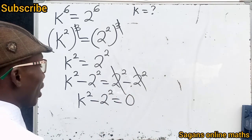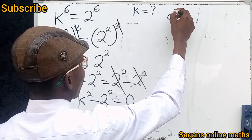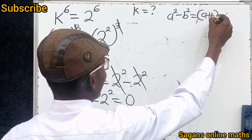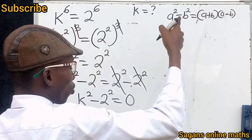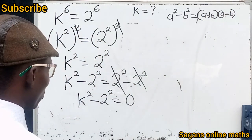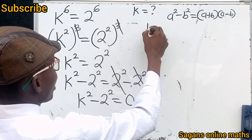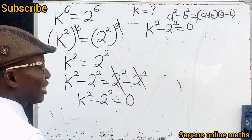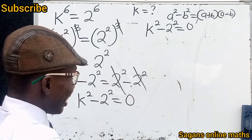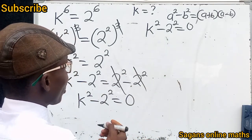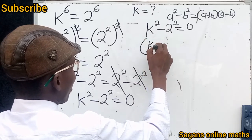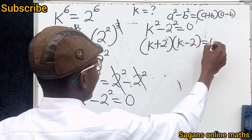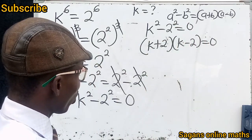You can observe that this is the difference of two squares. Recall that a squared minus b squared equals (a + b)(a − b). So k squared minus 2 squared equals zero becomes (k + 2)(k − 2) equals zero. This is a quadratic equation.